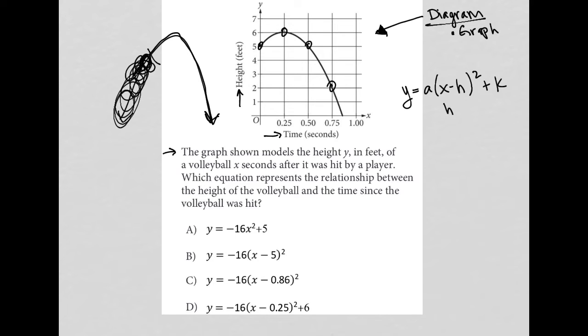So the h and the k from this equation represent the vertex. Just so happens that the vertex is one of these ordered pairs that we actually do know. The vertex is 0.25 in the x and 6 in the y. So 0.25 comma 6, which tells me that h is equal to 0.25 and k is equal to 6.